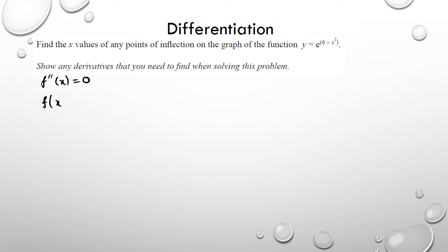We've got f of x equals e to the power of 6 minus x squared. So we need to differentiate it once. We're going to get e to the power of 6 minus x squared, and we've got negative 2x times that. Then the next step when you differentiate this — what rule do we need to use? Product rule, because it's being multiplied by two things.